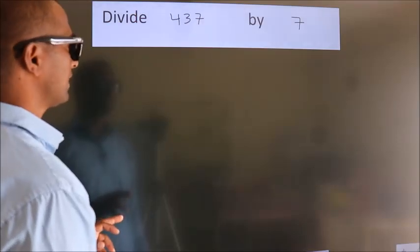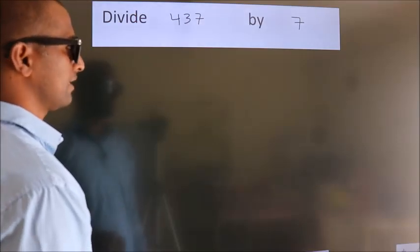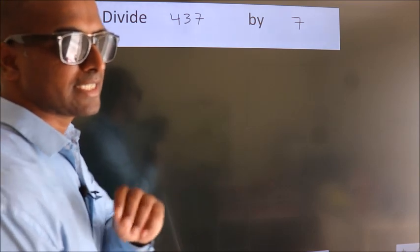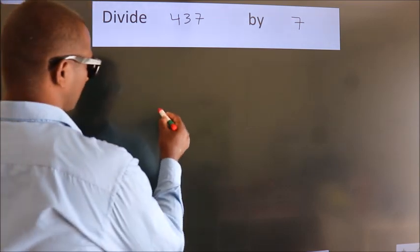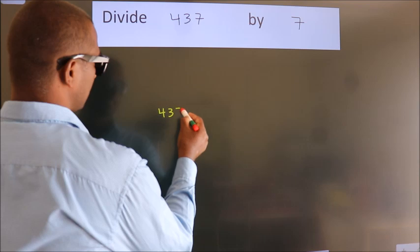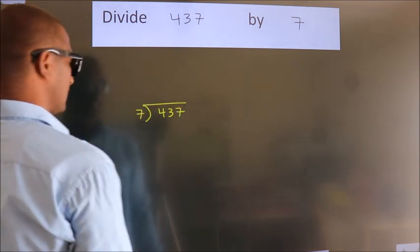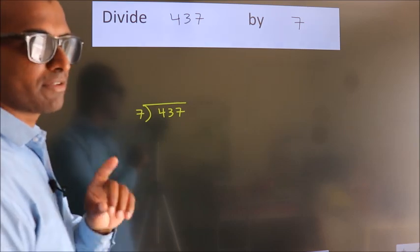Divide 437 by 7. To do this division, we should frame it in this way: 437 here, 7 here. This is your step 1.